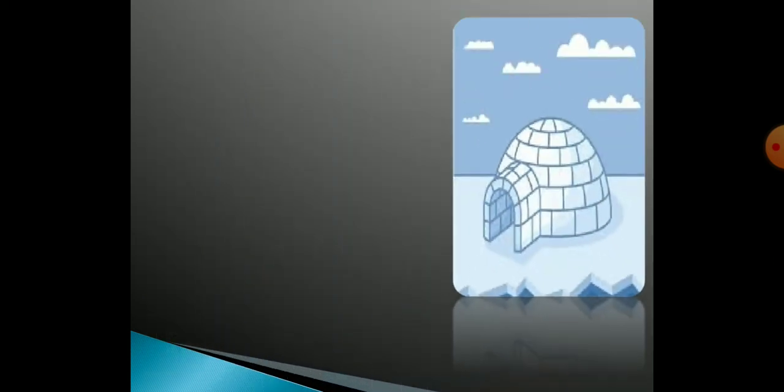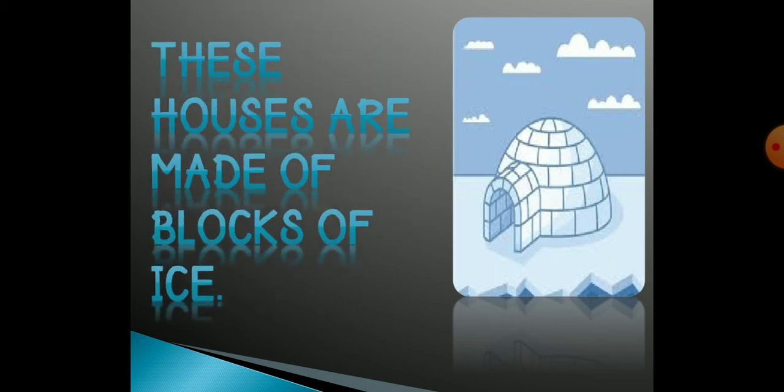This is a picture of an igloo. These houses are made of blocks of ice. Ice se bane hote hain, aur jo areas mein baraf zyaada padti hai, wahan pe ye houses aapko dekhne milenge.